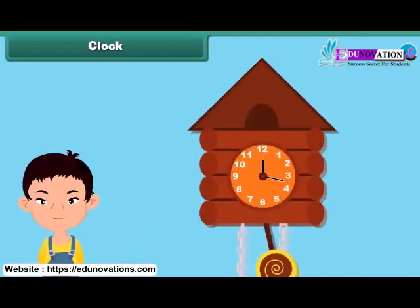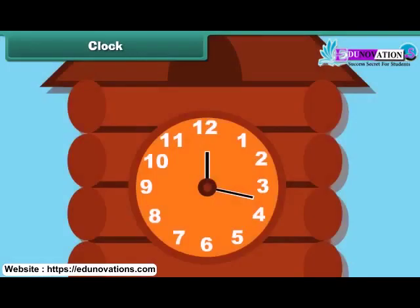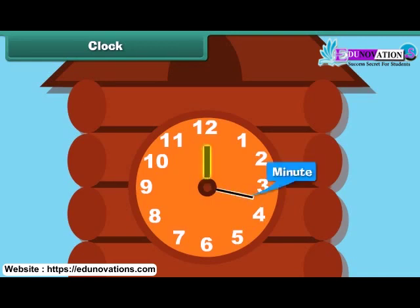The clock tells us the time. There are 12 equal divisions in a clock, named as 1, 2, 3, 4, 5, 6, 7, 8, 9, 10, 11, and 12. The clock has two hands. The longer hand is the minute hand whereas the shorter hand is the hour hand. The hour hand tells about the time in hours while the minute hand tells about the time in minutes.